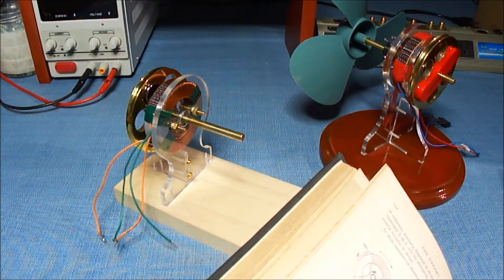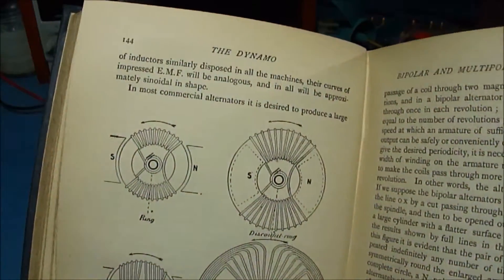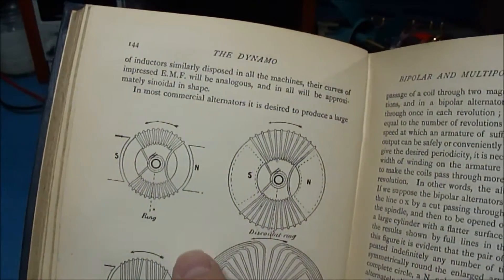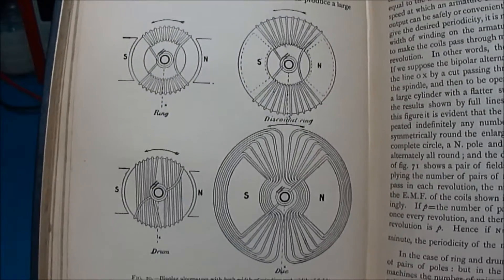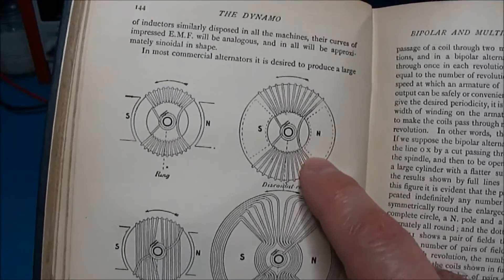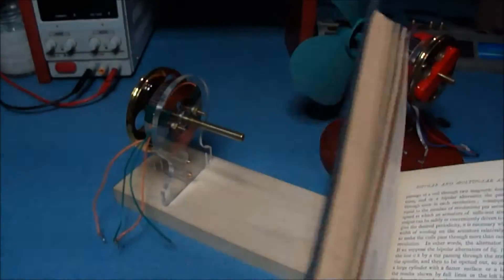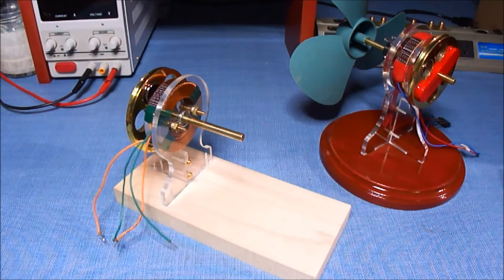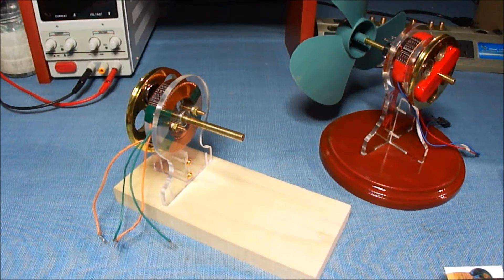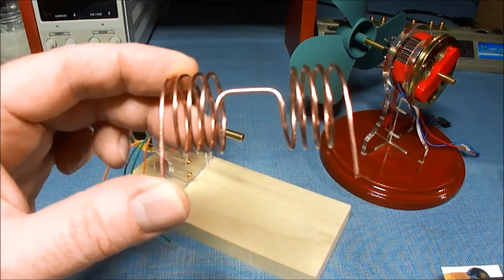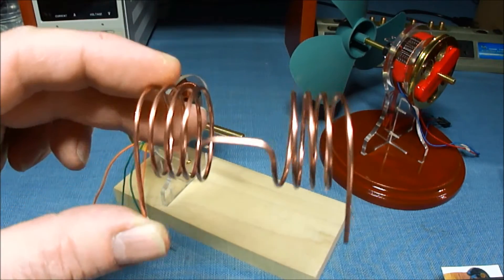The toroid design would have been under a subclass called a discoito ring or a drum armature. This is the coil that I'm working with. It's on page 144. A lot of good information in this book. That's also where this coil originated, on a discoito ring.